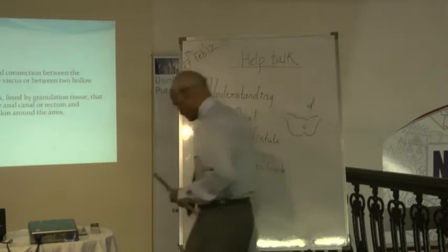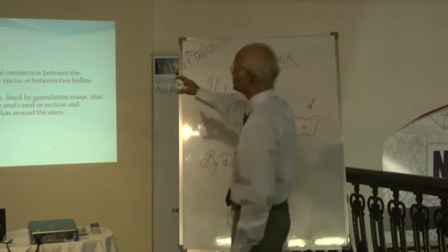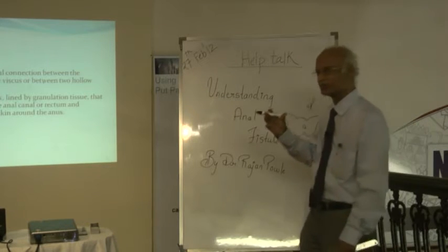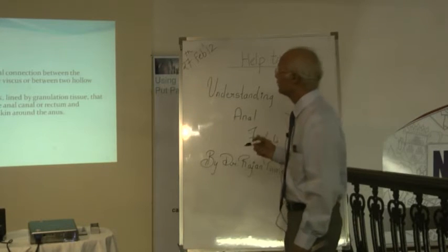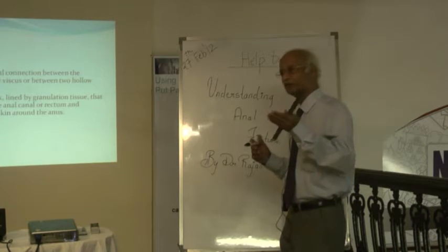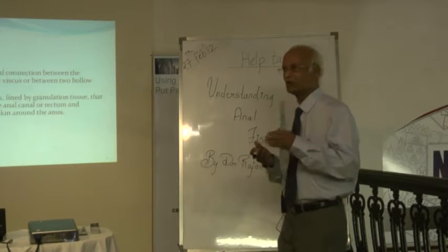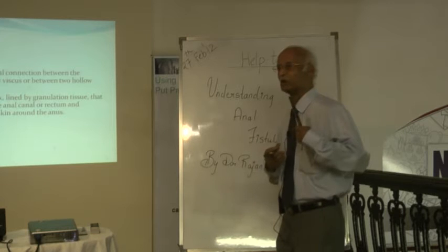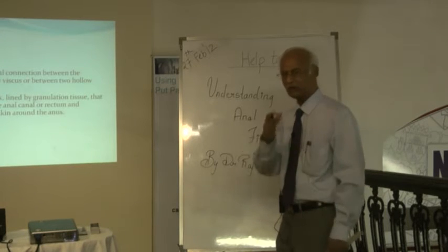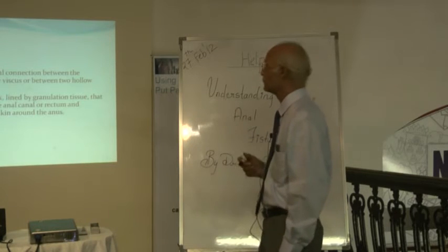A fistula is an abnormal connection between the exterior and a hollow viscus. The anus is a hollow viscus, or it may be between two hollow viscera. There could be a fistula between the stomach and the jejunum, or between the gallbladder and the duodenum. These are various other instances, but what we are going to talk about is fistula in ano.